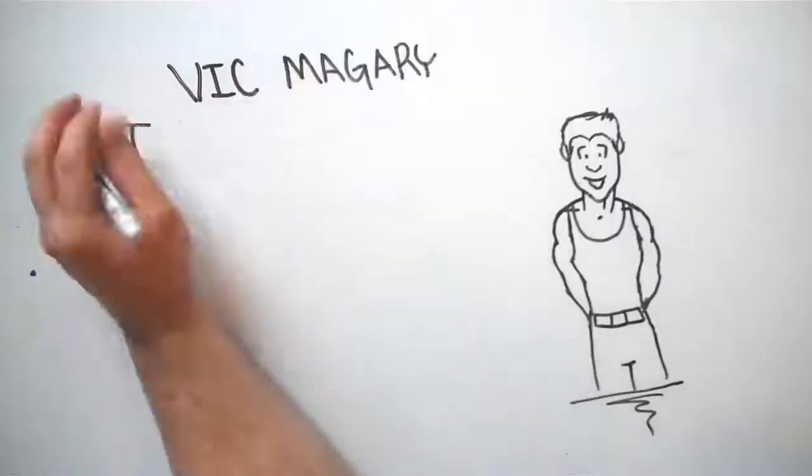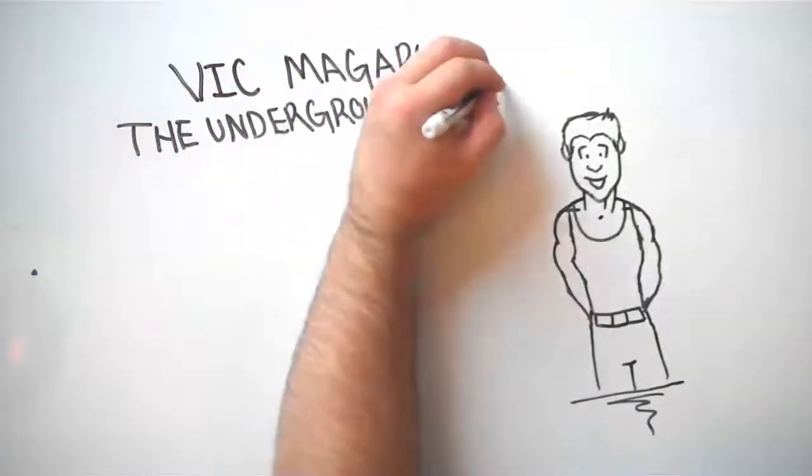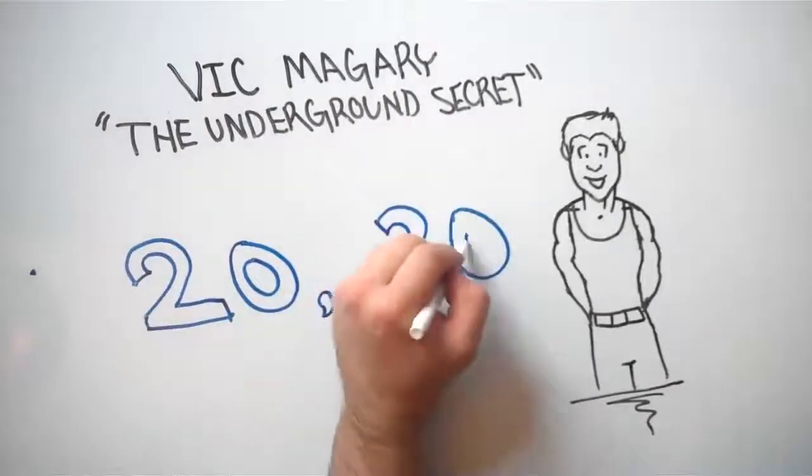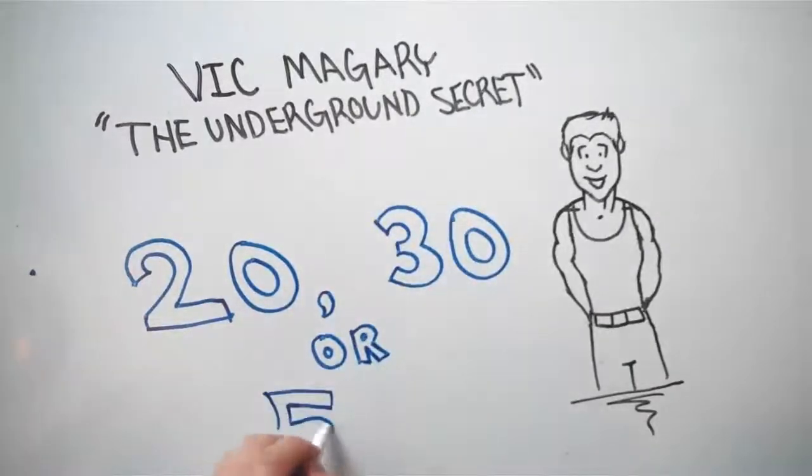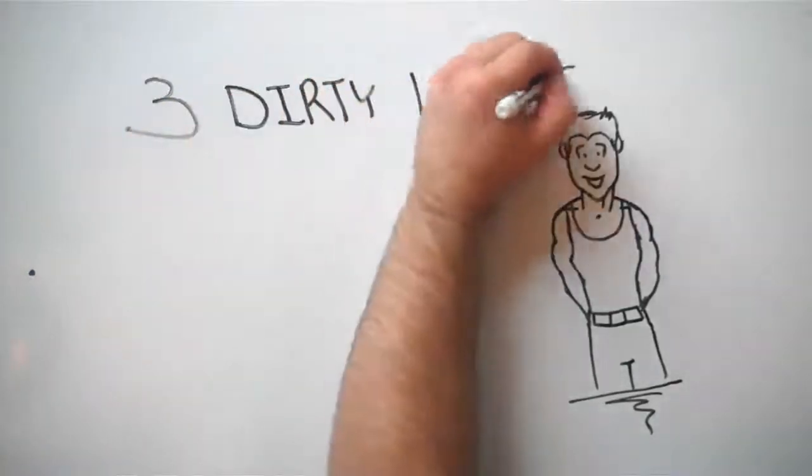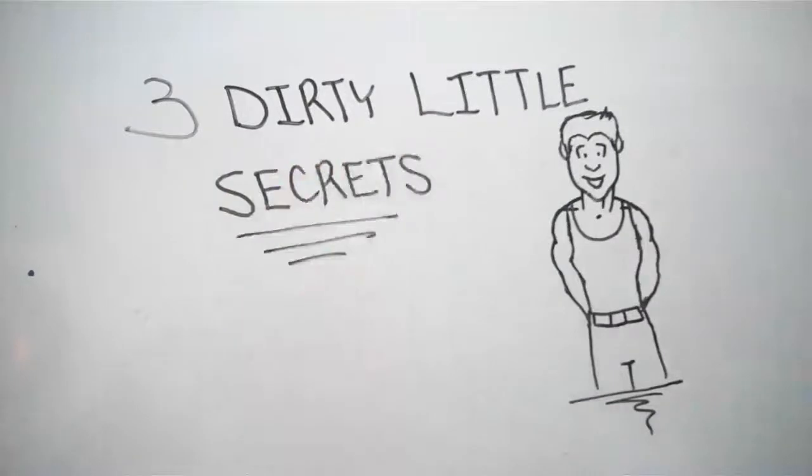Now, a few years after getting rid of my flabby belly and learning what really works for losing fat, I became a sort of underground secret for helping everyday people to lose 20, 30, or even 50 pounds of belly fat. And over the past few years, I've learned exactly what works and what doesn't when it comes to losing fat. I'm going to peel back the curtain and reveal three dirty little secrets the fitness and diet industry doesn't want you to know about.